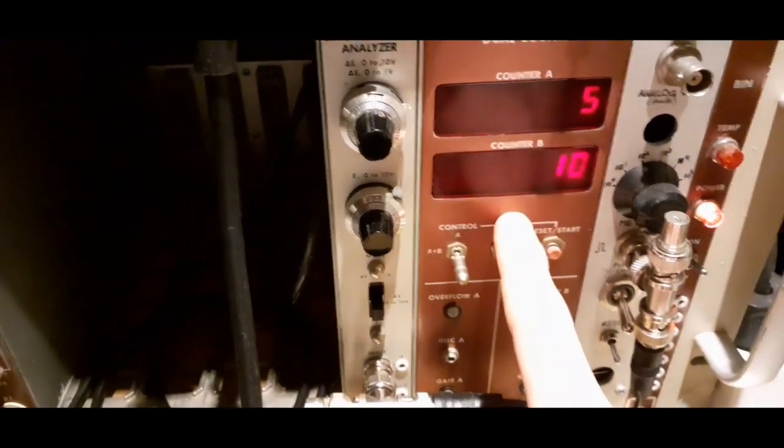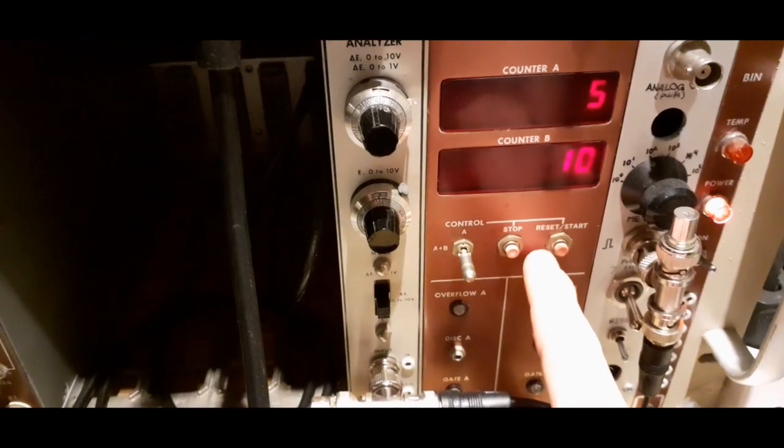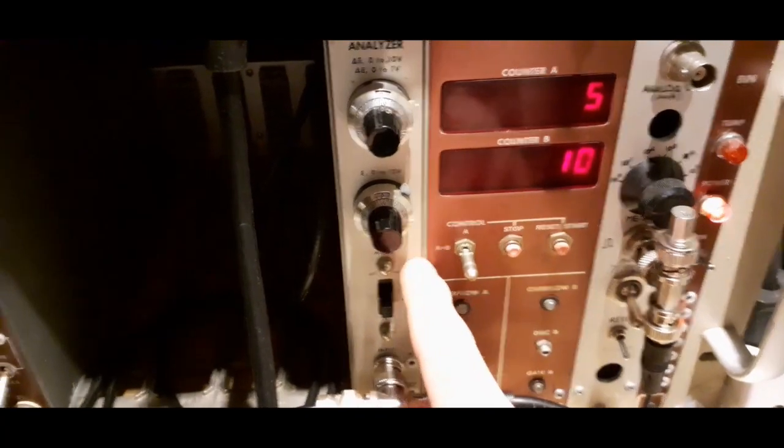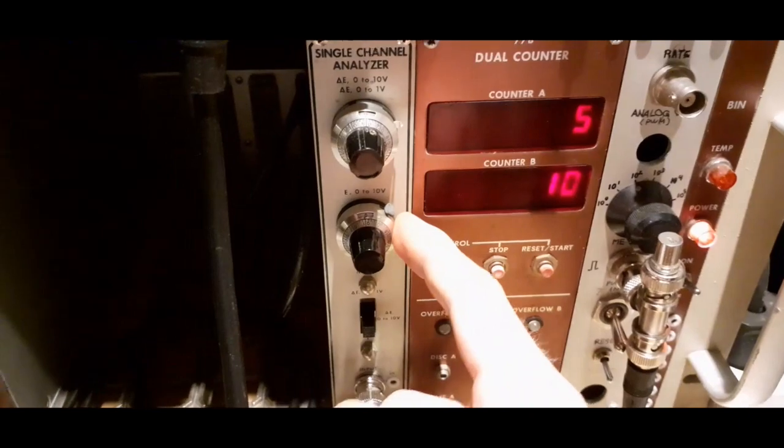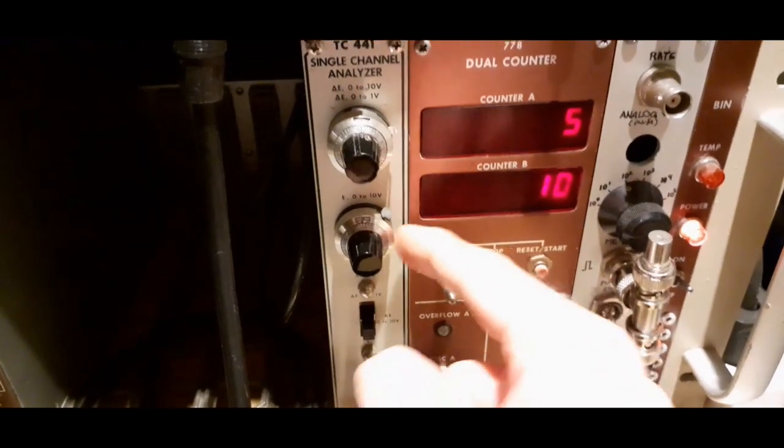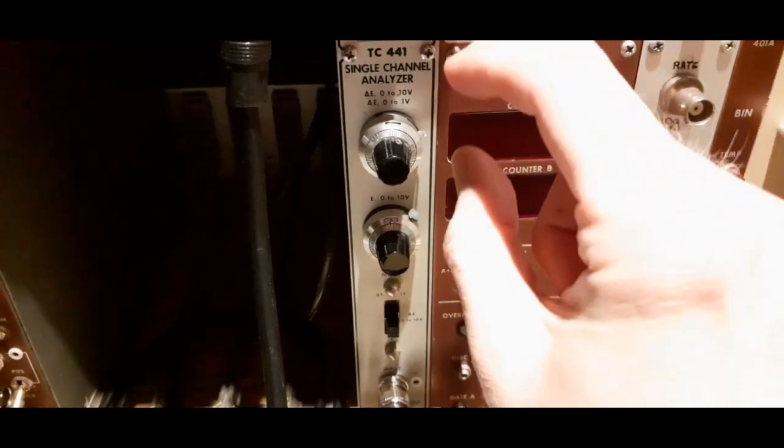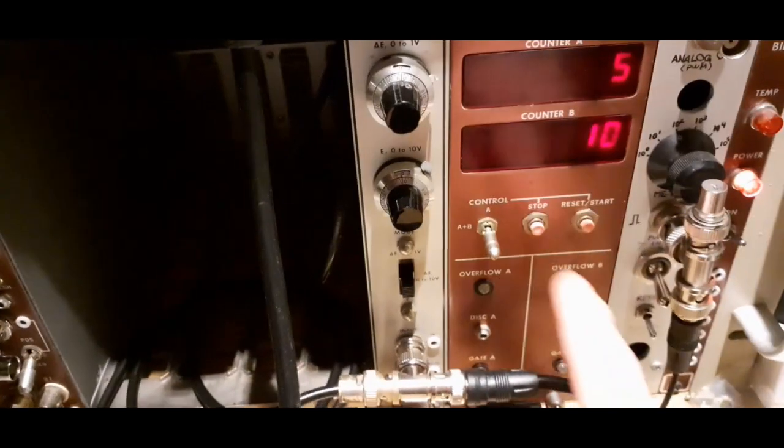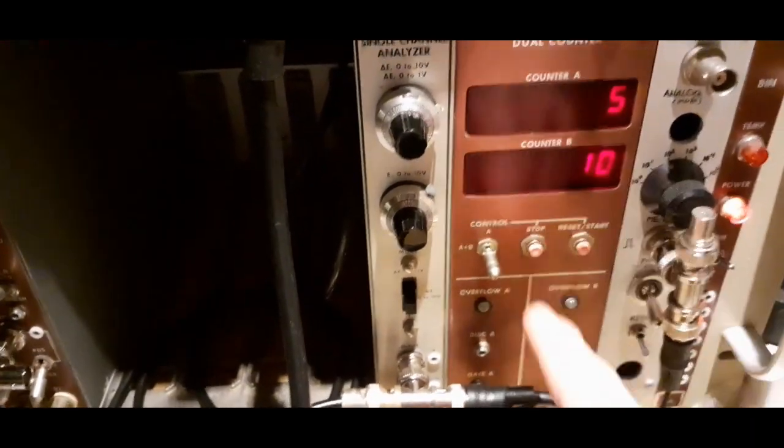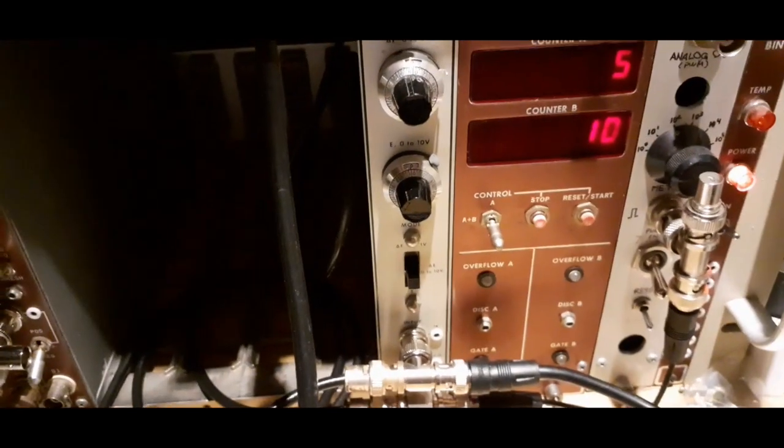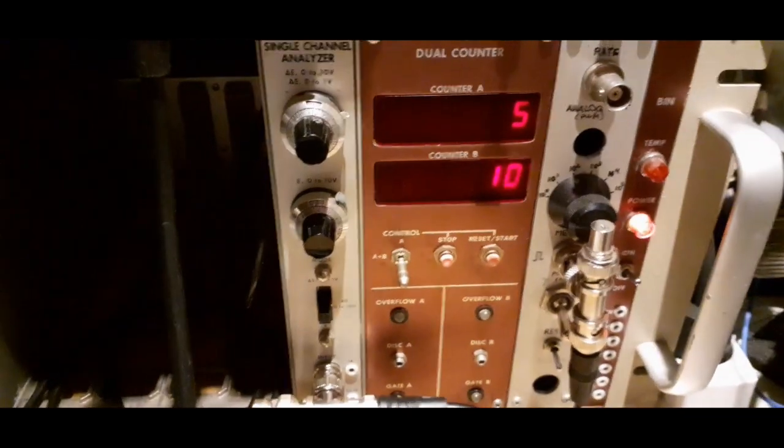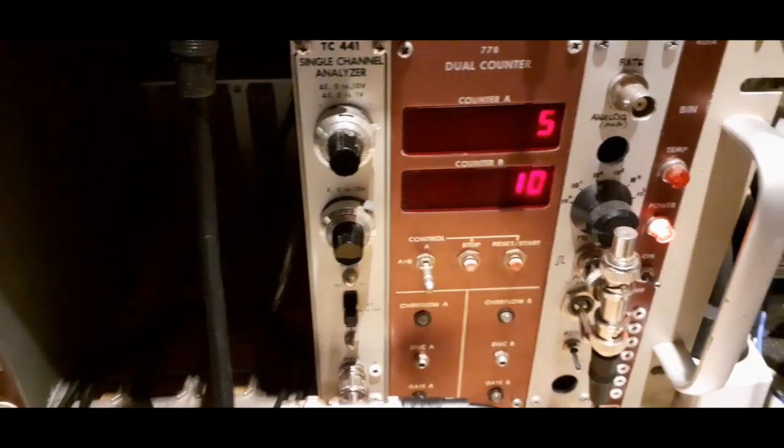But there's actually hope for bettering this, because I do have an RS-232 interface for this counter, which means I can print those counts on the computer. And this single channel analyzer does have an input that just takes a DC voltage instead of this value. So you could actually set a very tiny step here and just have the Arduino move that up after an ended count cycle on this. This also gives a logic pulse out when it's done counting. So you could actually make a decent gamma spectrometer out of this, but I don't think I'll bother. This was mainly a demonstration.